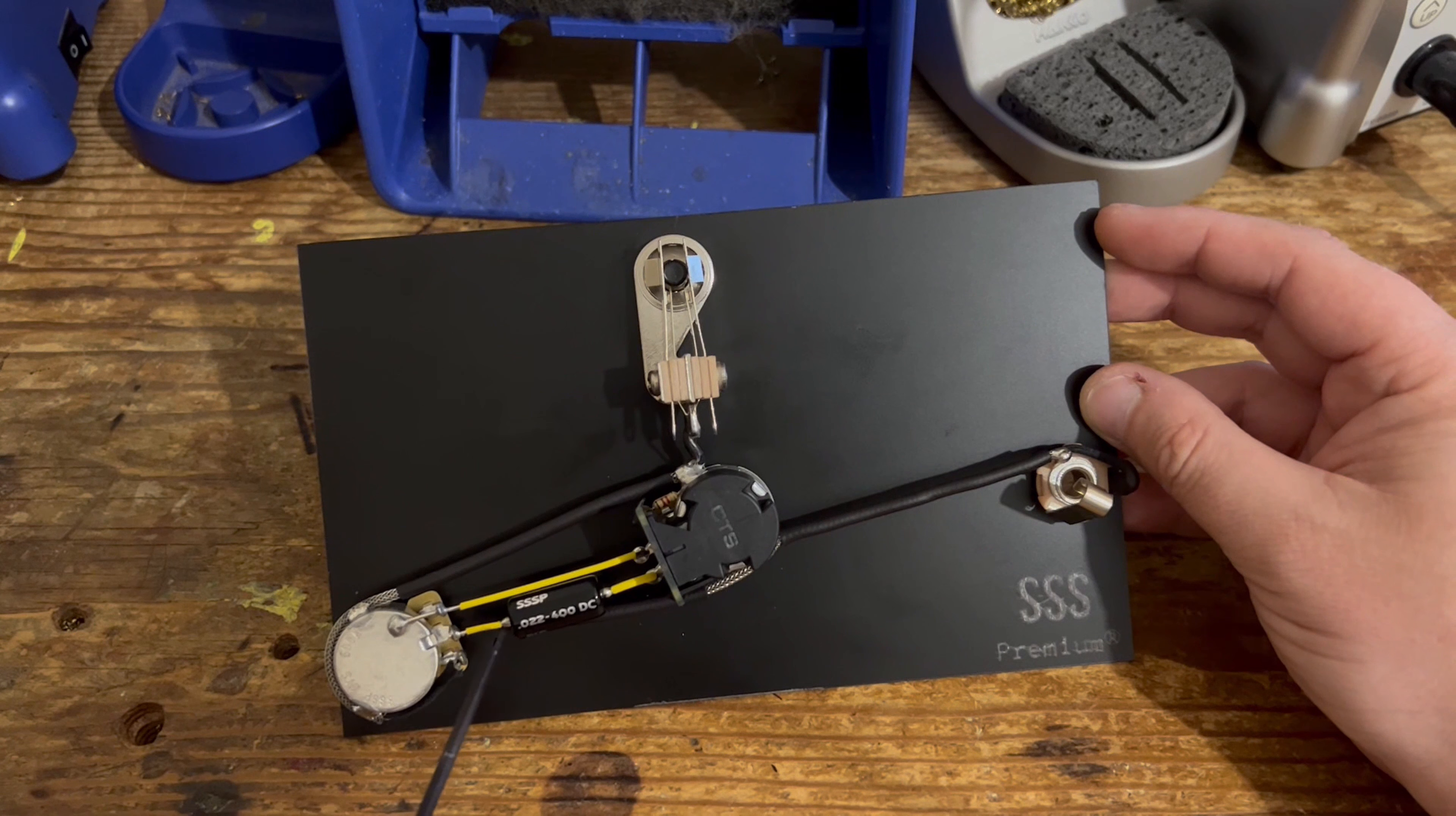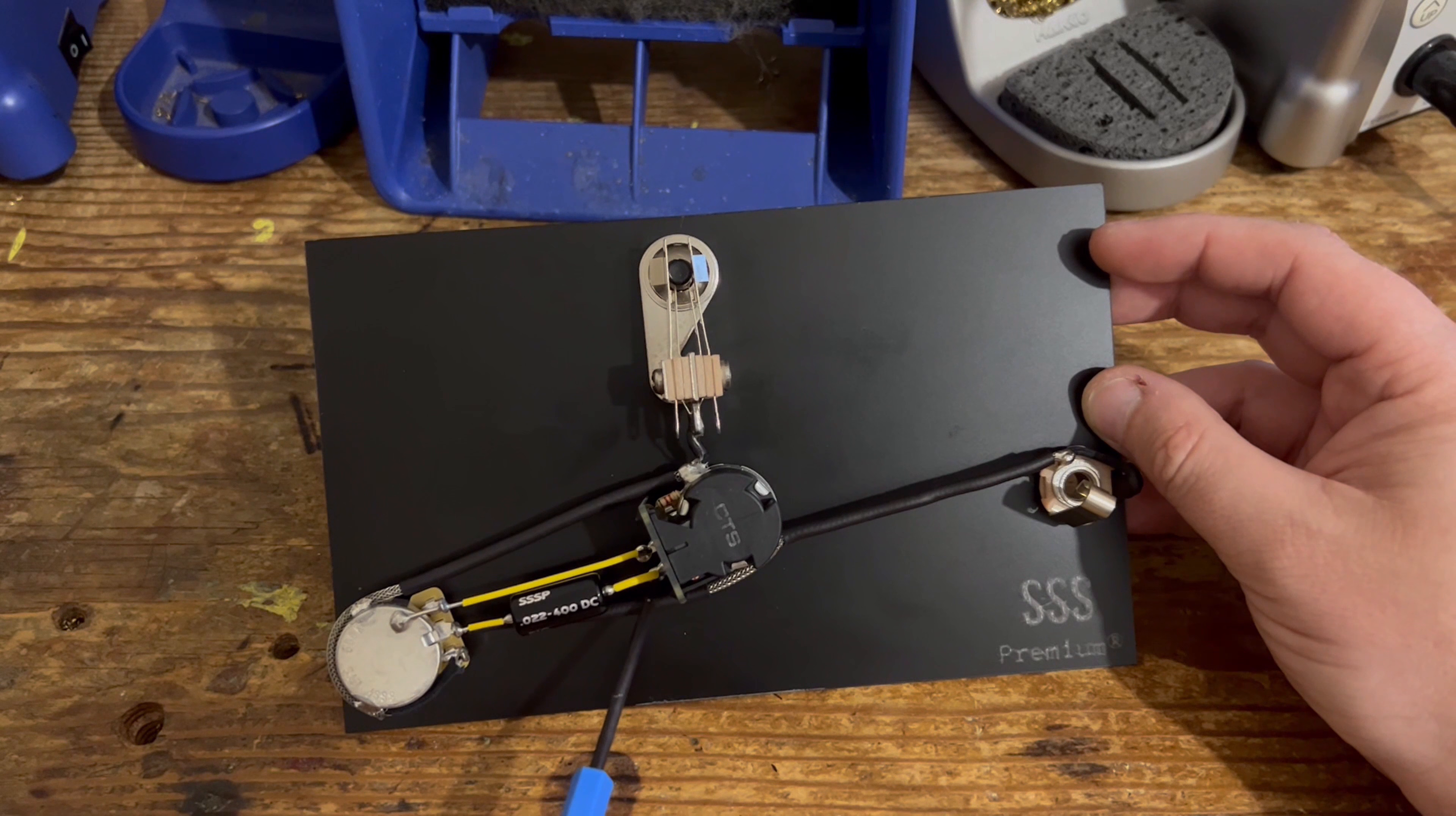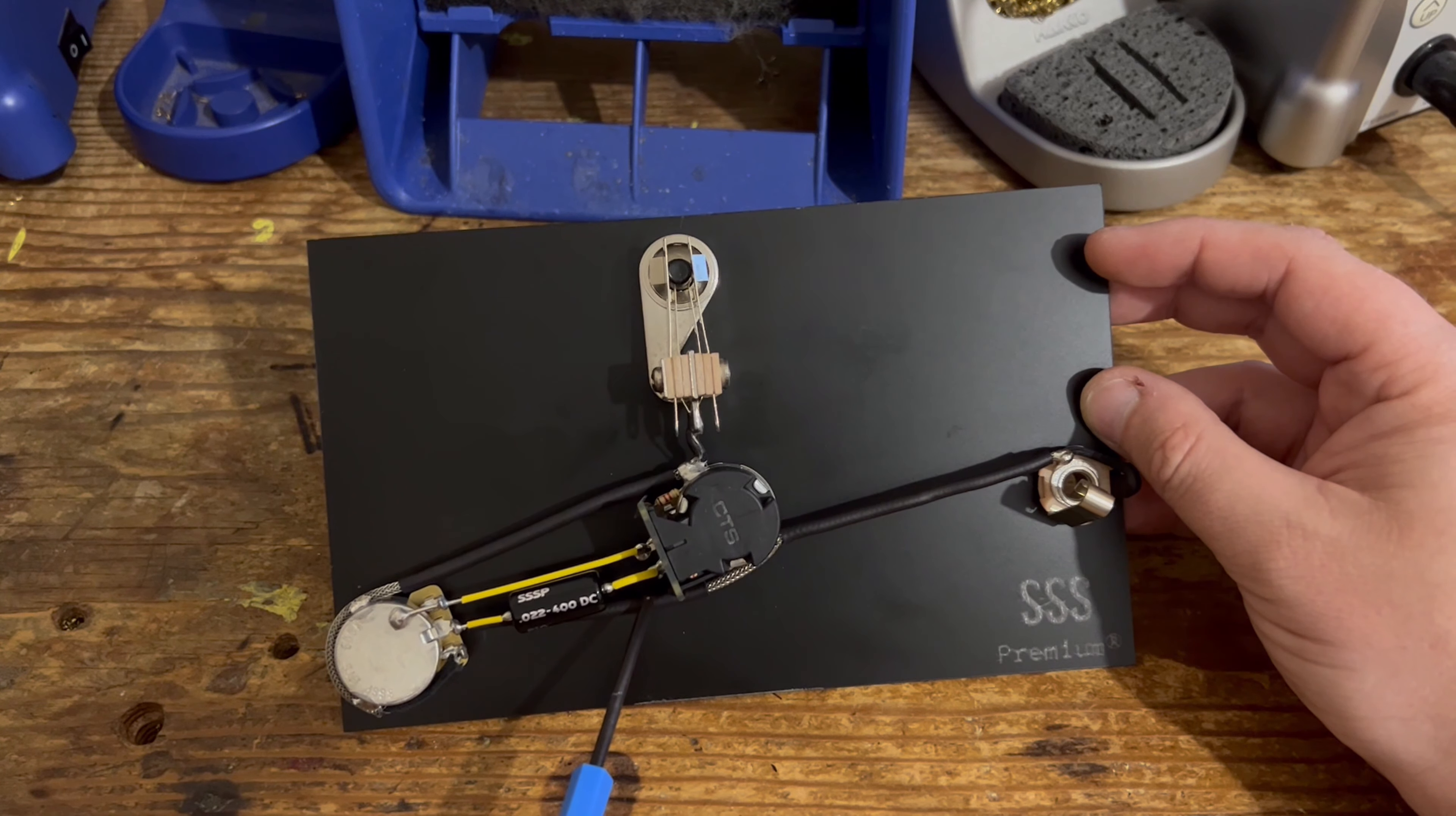Again, using 50s wiring, so the tone capacitor is going from the middle lug of the volume control to the bottom lug here on the tone control.